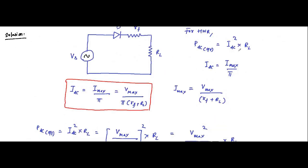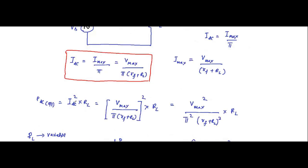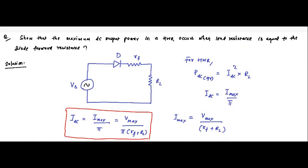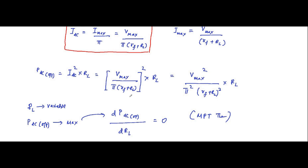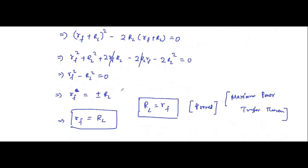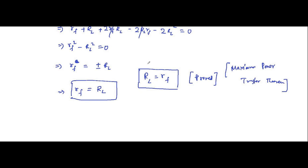To summarize: first we determined the expression for DC output power, equal to IDC² × RL. We determined IDC as I_max by pi, and I_max as V_max divided by (RF + RL). We substituted values to get the expression for DC output power. Since the variable parameter is load resistance RL, we differentiated the expression with respect to RL and set it equal to zero. This gave us the final relationship: RL = RF.